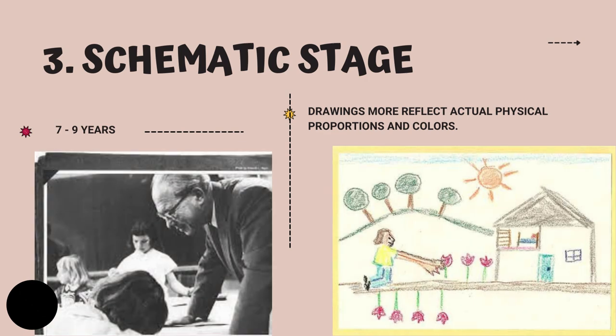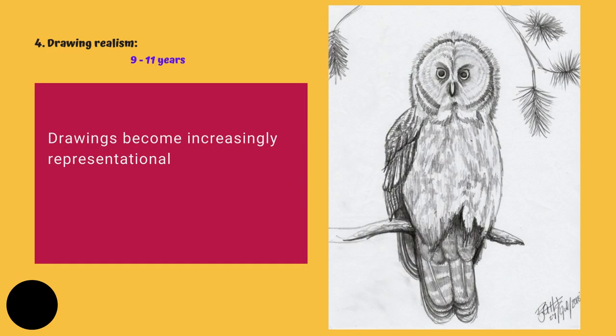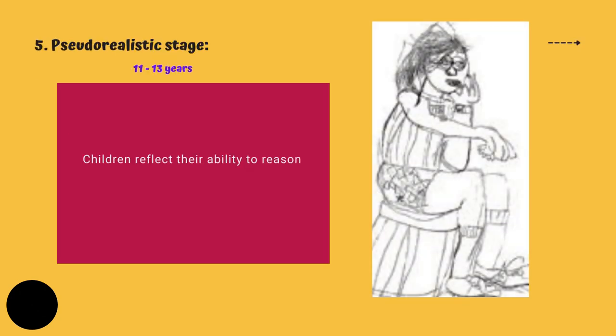Number three is the schematic stage, seven to nine years. Drawings more reflect actual physical proportions and colors. Number four is drawing realism, nine to eleven years — drawings become increasingly representational. Number five is the pseudo-realistic stage, eleven to thirteen years, where children reflect their ability to reason.